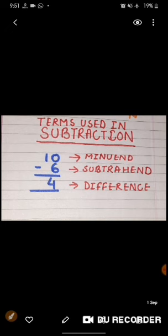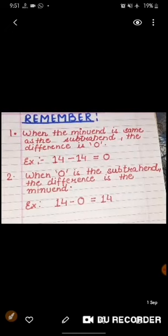Let's jump to the next topic. Here you have to remember some things. Dear students, you should remember that when the minuend is same as the subtrahend, the difference is zero. Here, example is given that if 14 is minus by 14, we get zero. If both the minuend and the subtrahend are same, then the answer is zero.